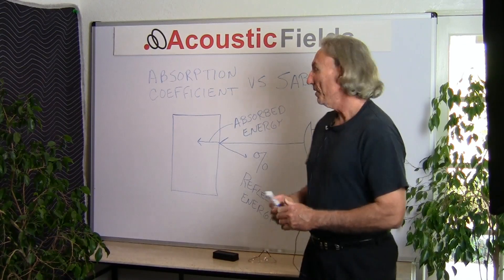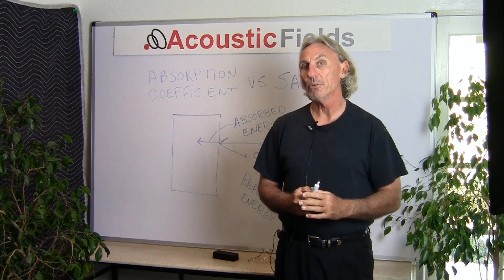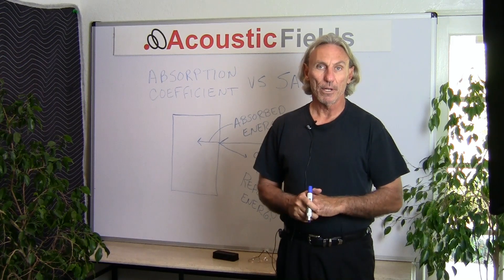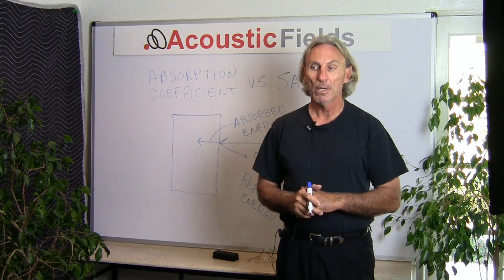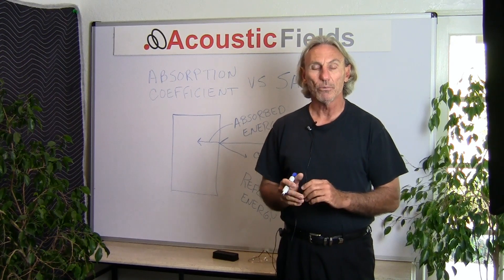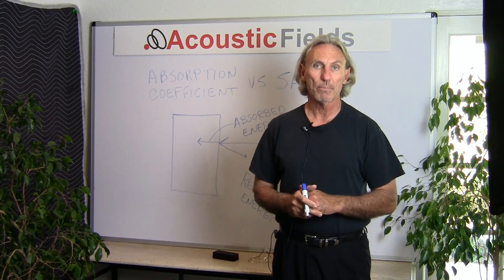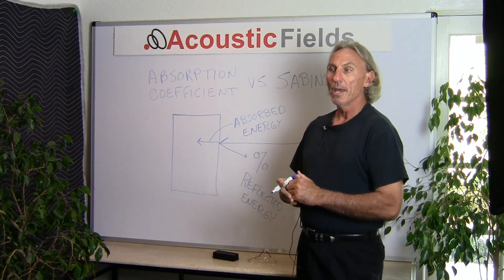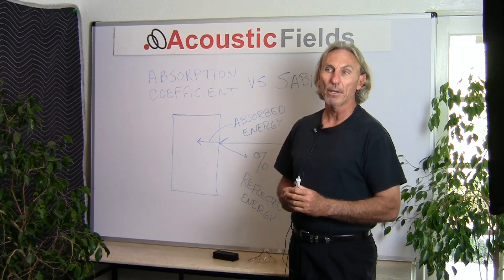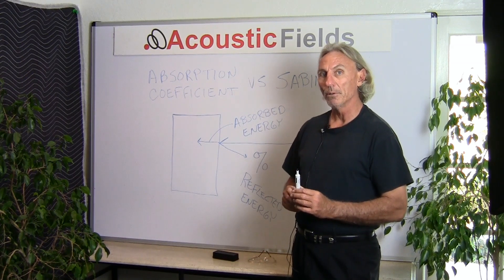Hi everyone, Dennis Foley from Acoustic Fields. Today we're going to talk about absorption coefficient in Sabins. These are two forms of measurement that we use for sound absorbing products. There are guidelines that we use when we're considering the total amount of absorption inside of a room, and also guidelines to measure the absorption power of a particular technology and a product. You see these two measurements in the literature quite often, so let's explain them and give some examples. They're often misused and mislabeled, so hopefully this will help you get a better understanding.